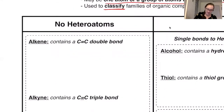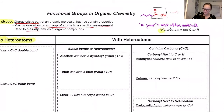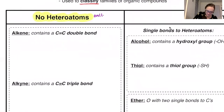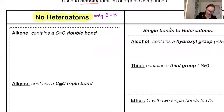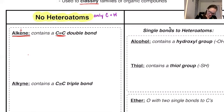Let's look at our first functional groups — those with no heteroatoms. Heteroatoms are anything that's not carbon and hydrogen, so no heteroatoms means only carbon and hydrogen in these functional groups. Our first one is an alkene — notice it's almost the same as an alkane but with an 'e' in the middle. An alkene contains a carbon-carbon double bond.